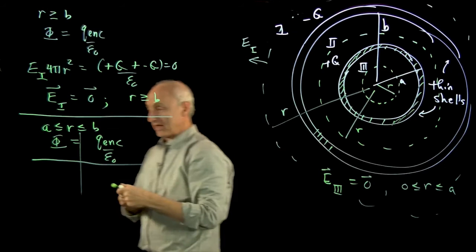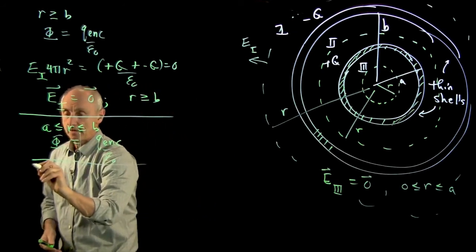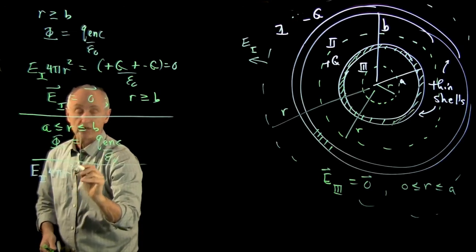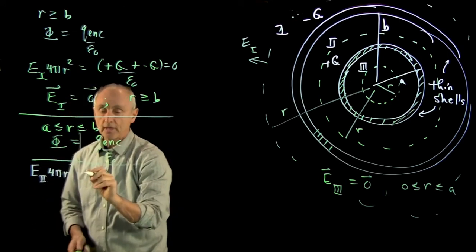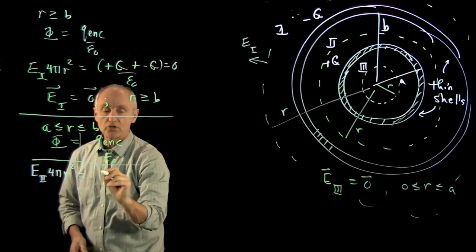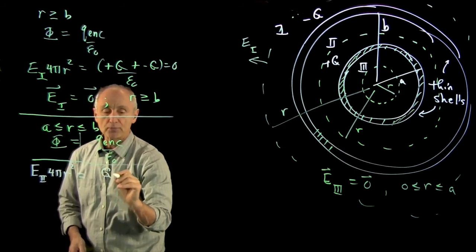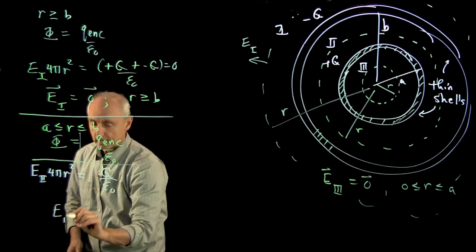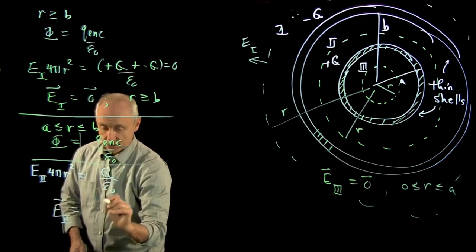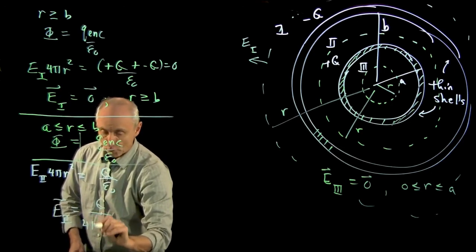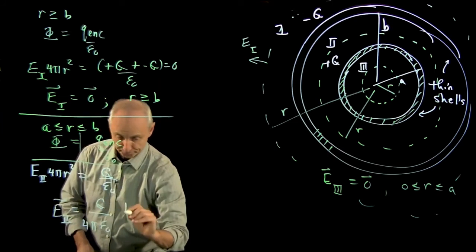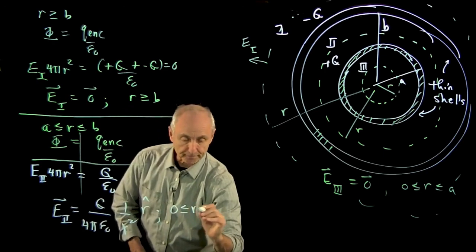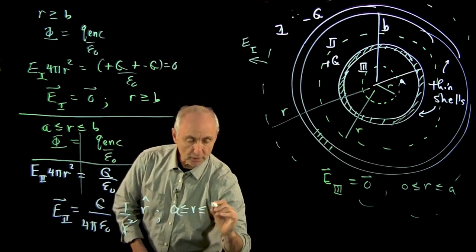And so we get e2 times the area of the Gaussian sphere is equal to the total charge plus q divided by epsilon 0. And so our conclusion is q over 4 pi epsilon 0, 1 over r squared r hat for the field between.